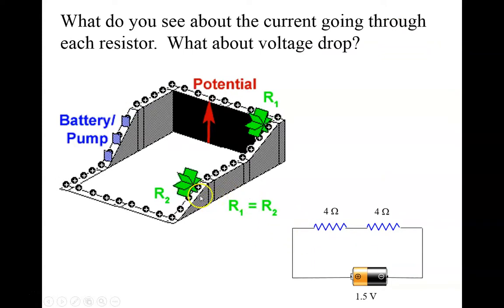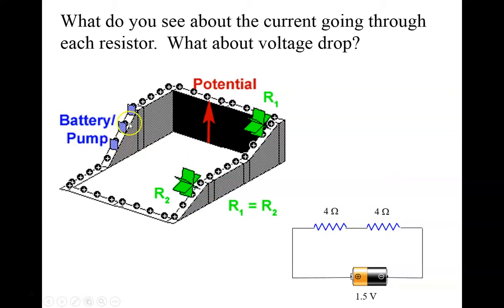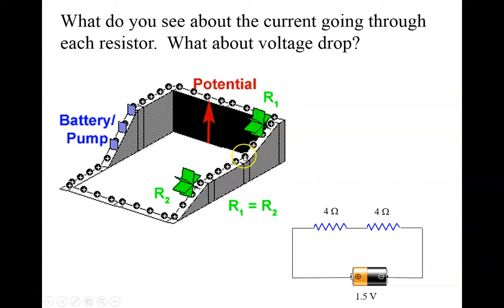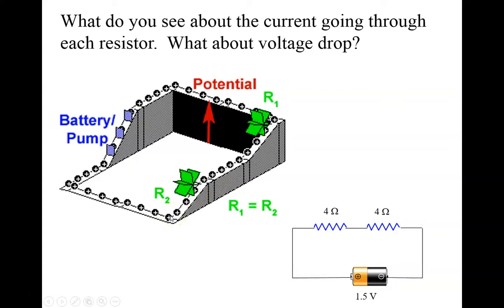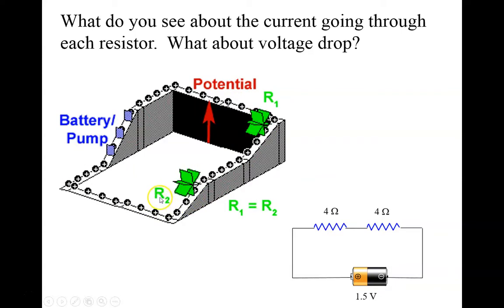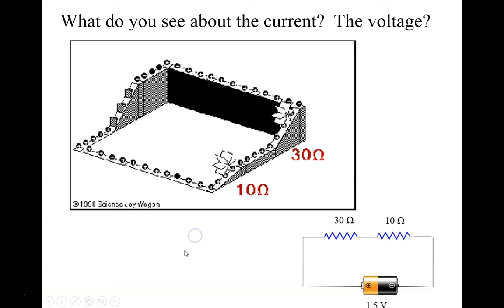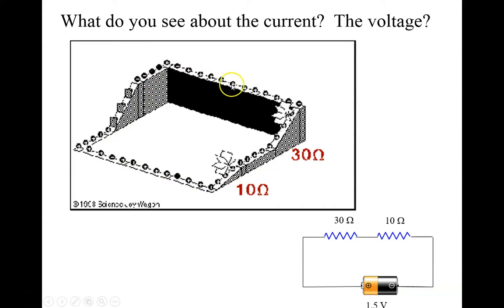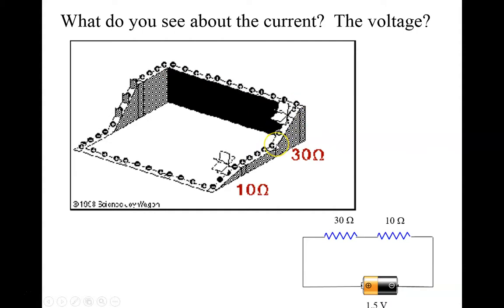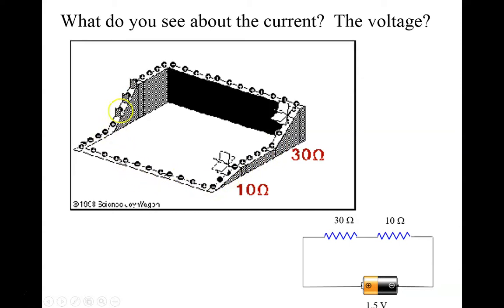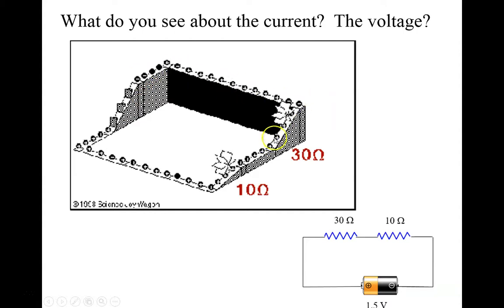Now, which one is this? Is it series or parallel? This one is series because there's only one loop to follow. The battery pumps up the electrons, then they lose some voltage across the first resistor and the rest across the second. The current is the same everywhere, but the voltage drops differently across the resistors - you lose more voltage across the resistor with the higher resistance.